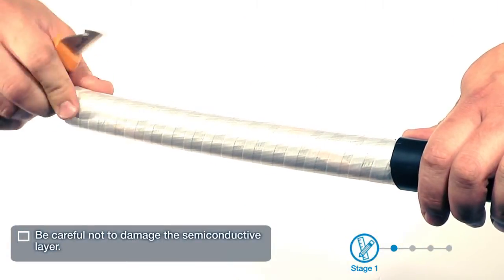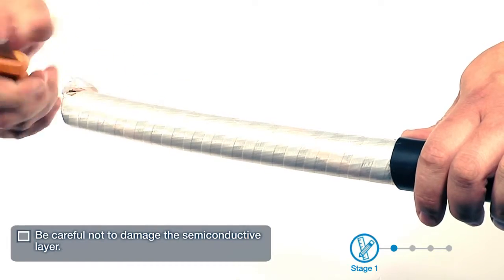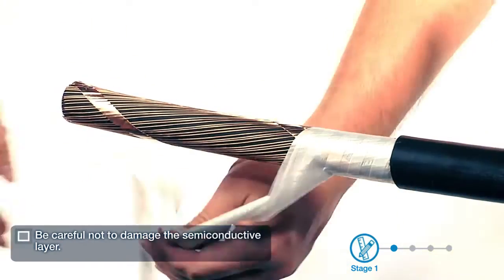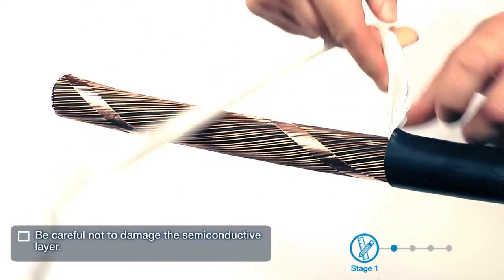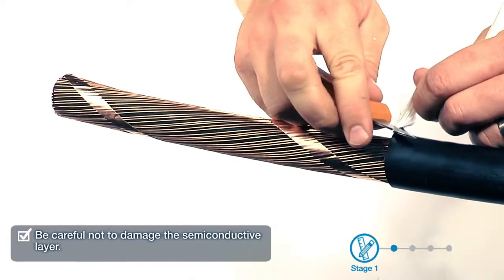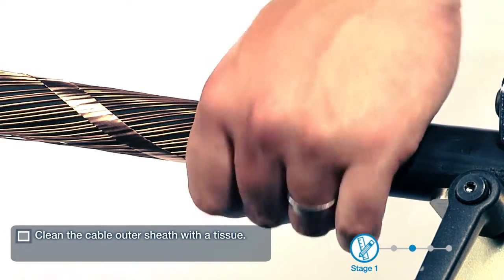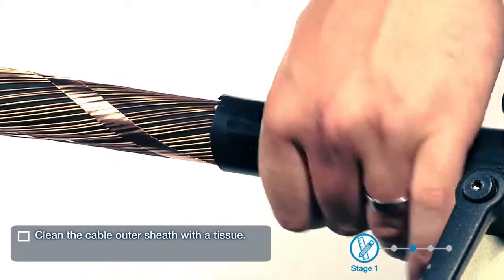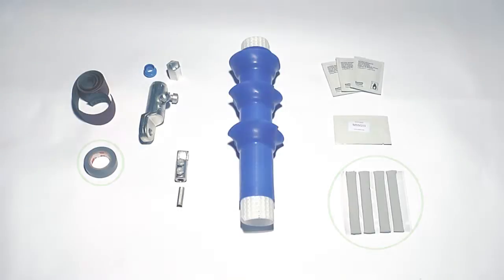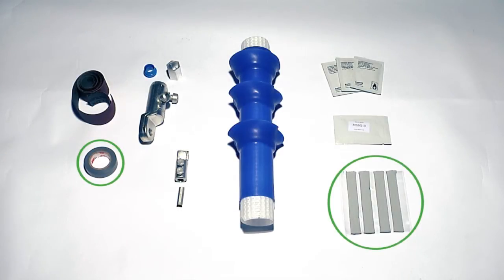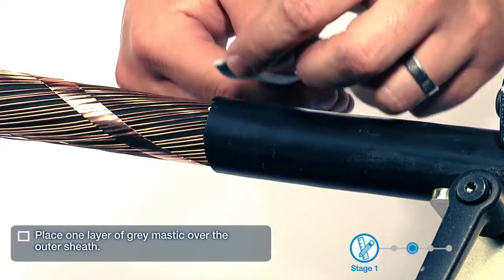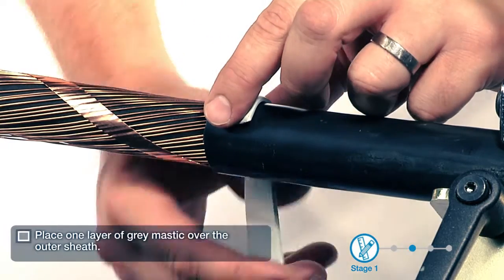Be careful not to damage the semi-conductive layer. Clean the cable outer sheath with a tissue. Place one layer of grey mastic over the outer sheath.